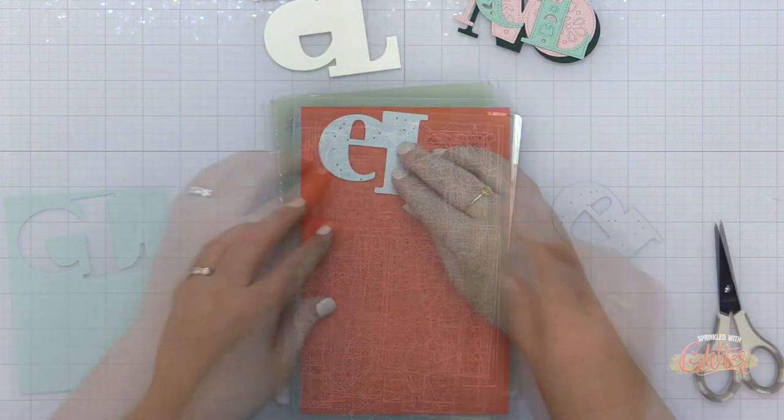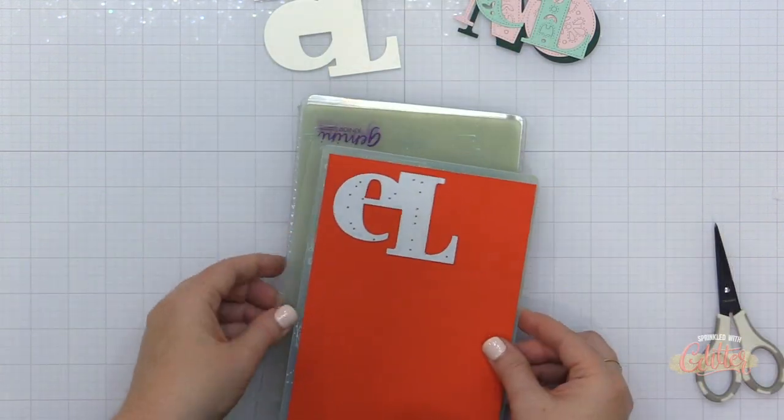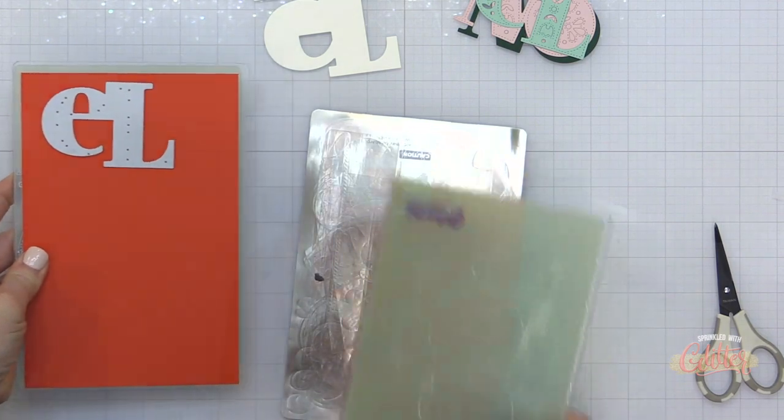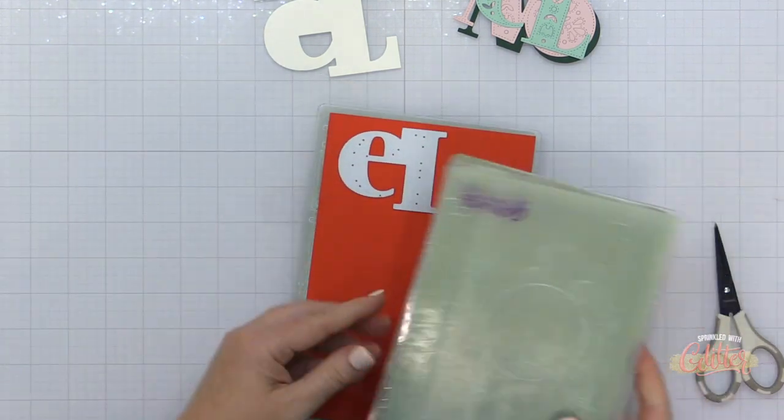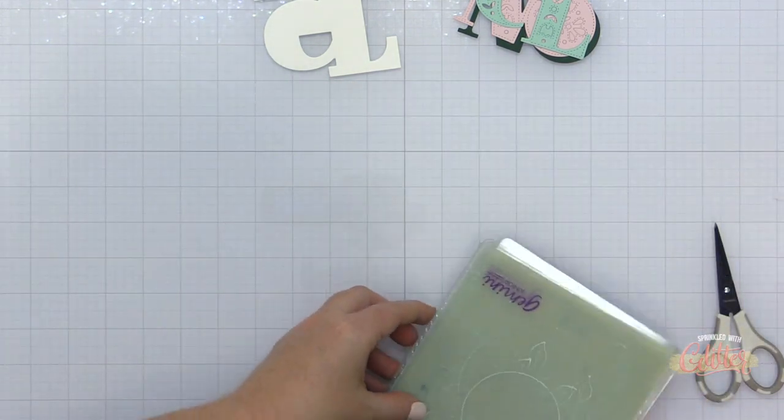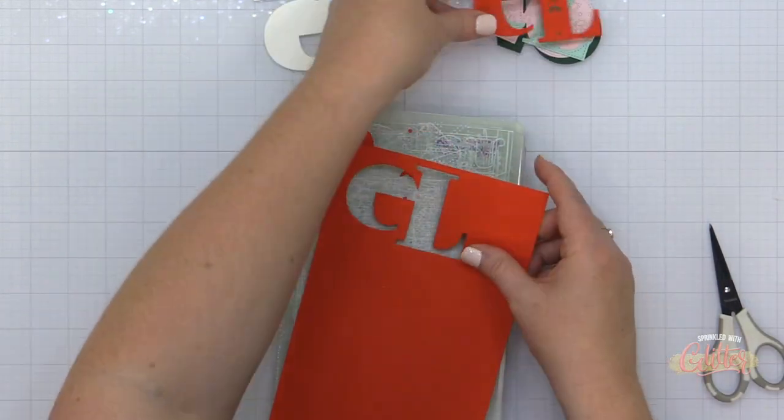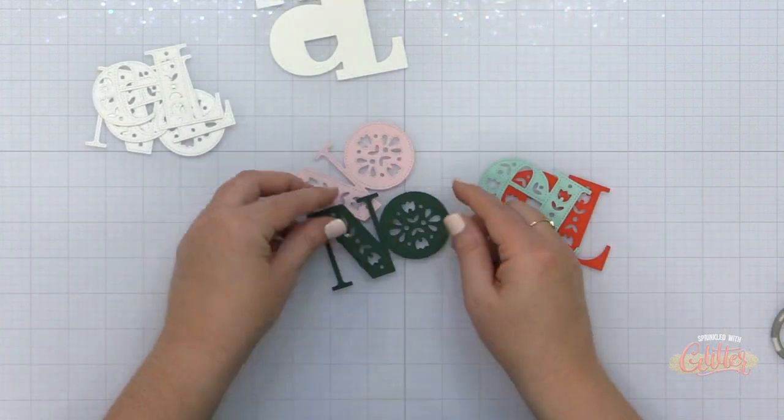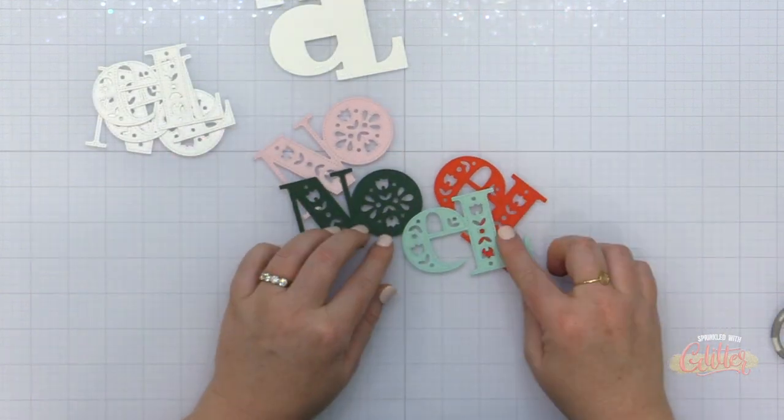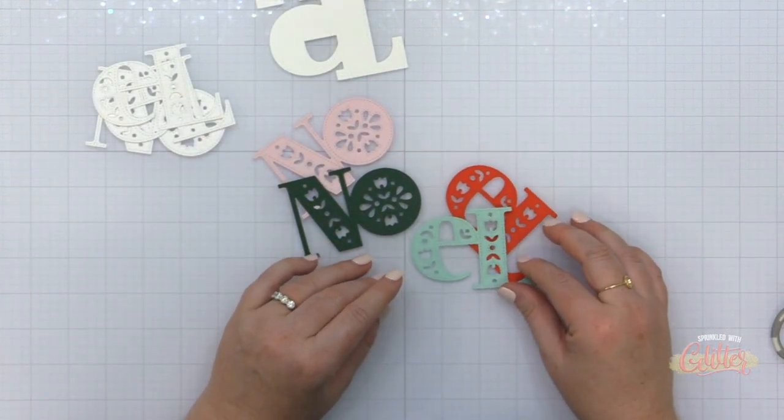In addition to the Noel dies, you also get some dies that create the little dots that go inside of these knockouts, the little tulips, and the leaves. So you can die cut several of those tulips, several of those leaves, or several of those dots all at once using this die set as well.